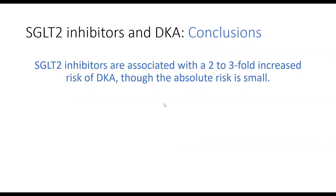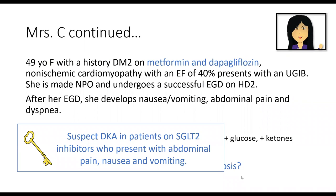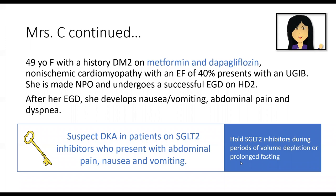The key take-home points: suspect DKA in patients on SGLT2 inhibitors who present with abdominal pain, nausea, and vomiting. Remember to hold SGLT2 inhibitors during periods of volume depletion or prolonged fasting—this is when they're at highest risk of going into DKA.